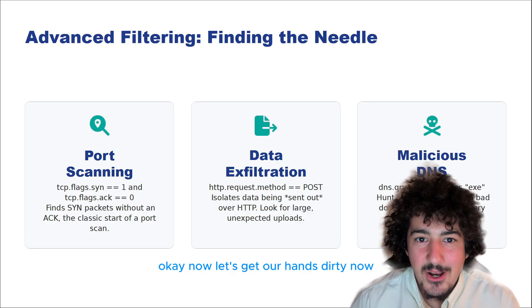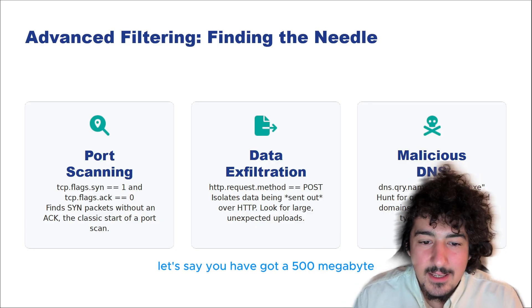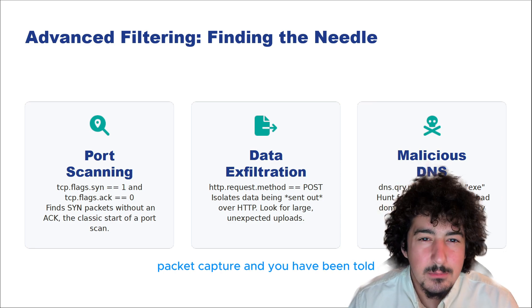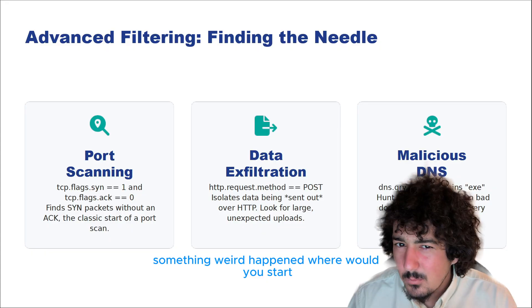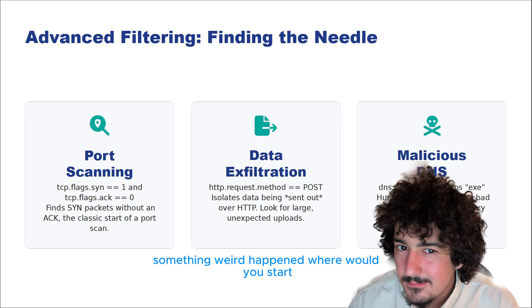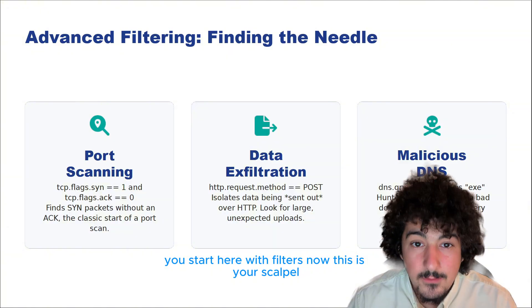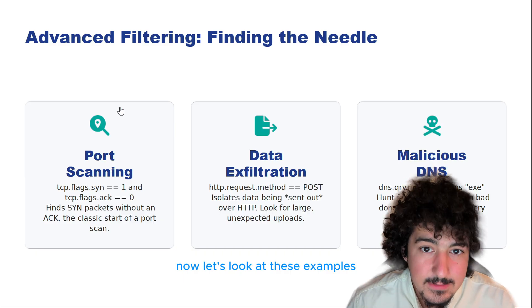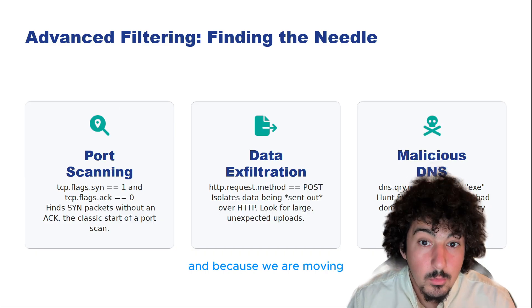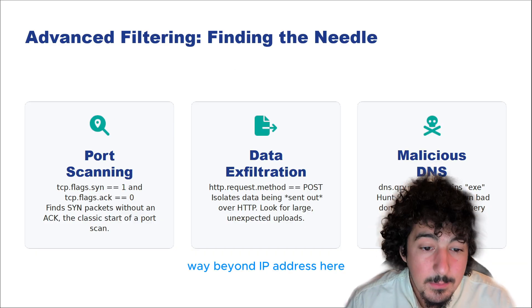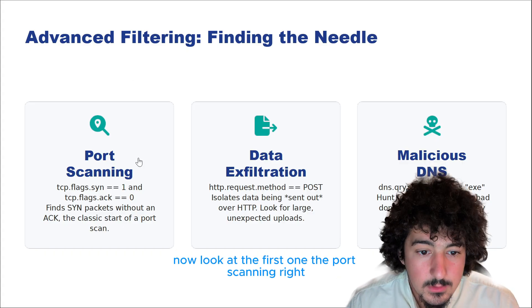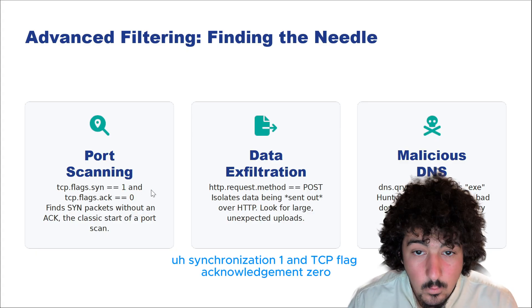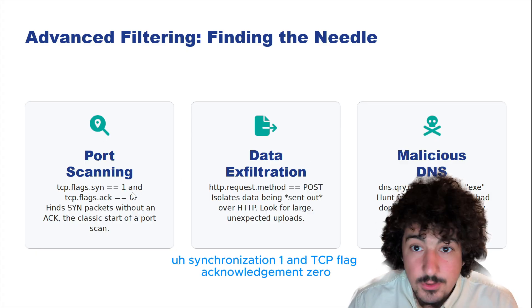Now let's get our hands dirty. Let's say you have a 500 megabyte packet capture and you have been told something weird happened. Where would you start? You start here with filters — this is your scalpel. Let's look at these examples because we are moving way beyond the IP address. Look at the first one: port scanning. TCP flag synchronization equals one and TCP flag acknowledgement equals zero.